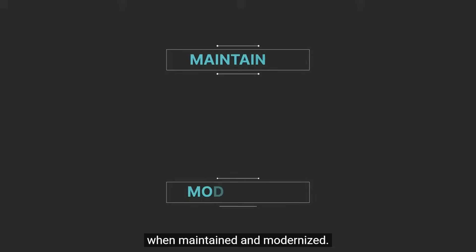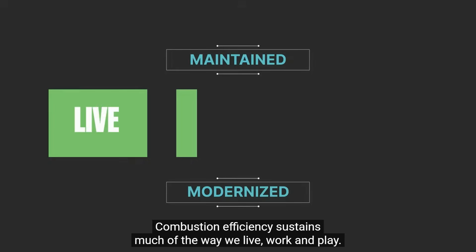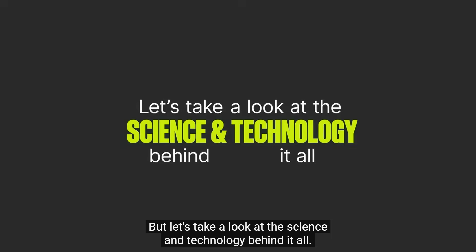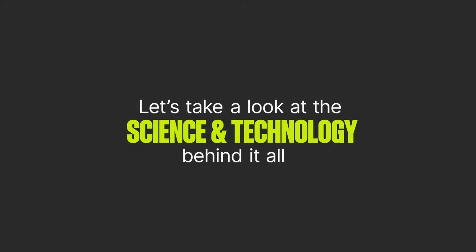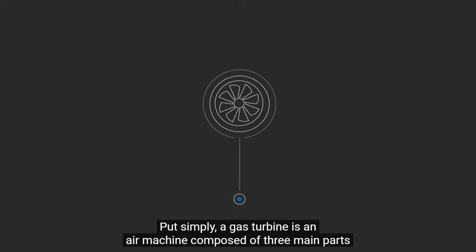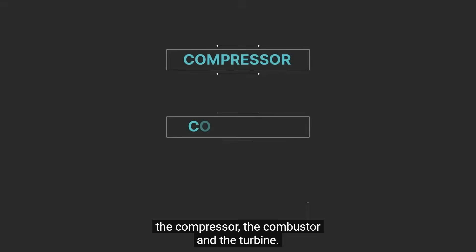When maintained and modernized, combustion efficiency sustains much of the way we live, work, and play. But let's take a look at the science and technology behind it all. Put simply, a gas turbine is an air machine composed of three main parts: the compressor, the combustor, and the turbine.